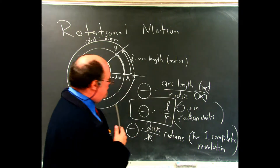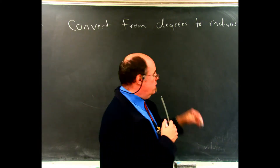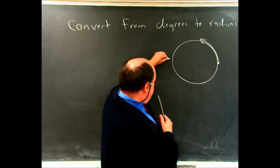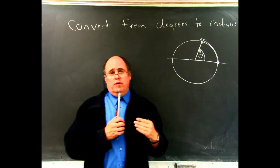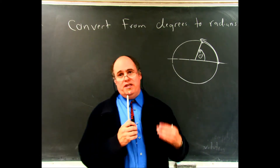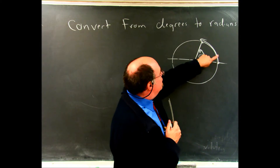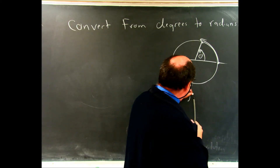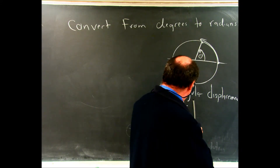This is the definition of the angle. In chapter 2, we talked about an object walking down the street going through a physical displacement. Here, if an object travels through a circular path, it has an angular displacement. When we say theta, it means angular displacement, and it's in units of radians.